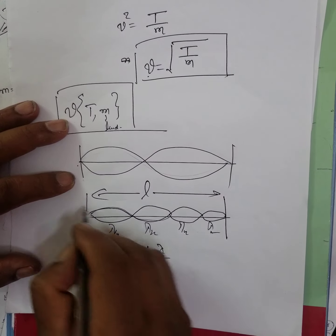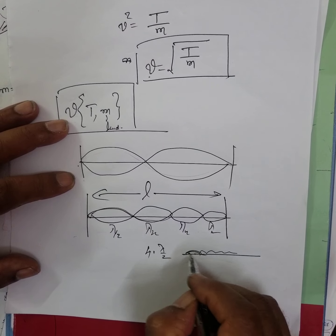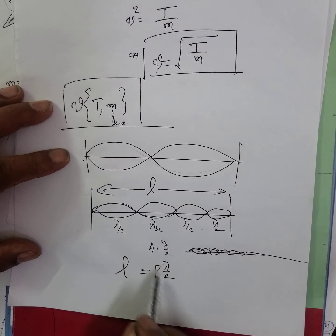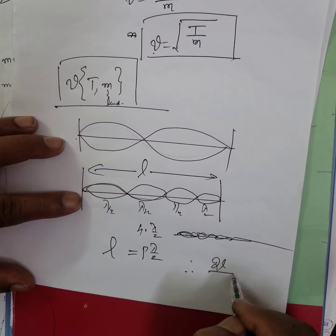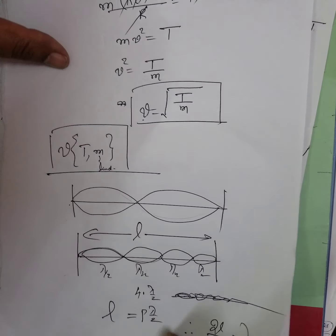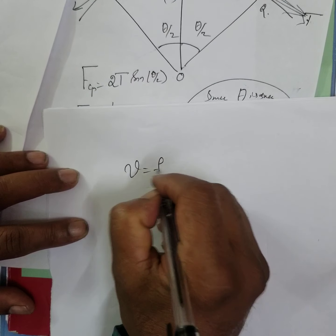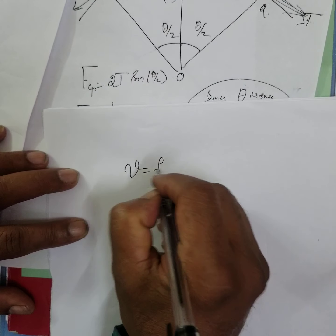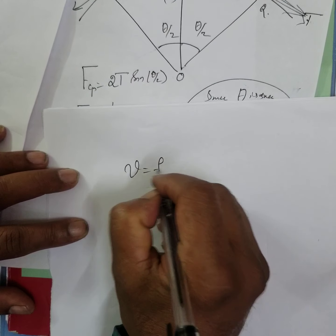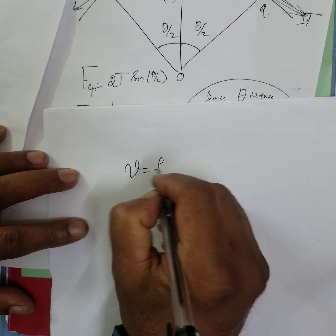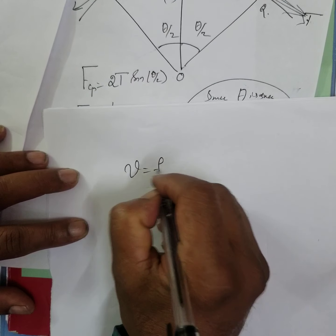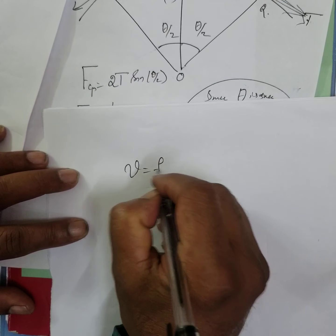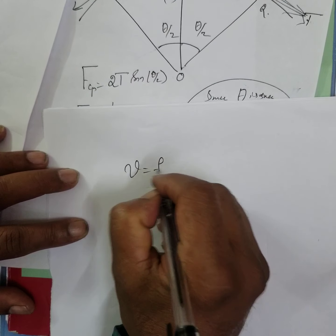If you pluck somewhere at one-fourth of the string, you will get two stationary waves, or loops. The number of loops depends on the position of plucking and the tension. Each loop has length λ/2. If there are P loops, then P·(λ/2) = L, therefore λ = 2L/P.